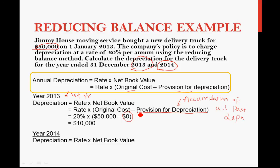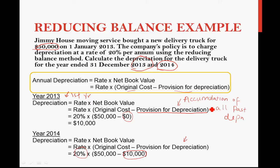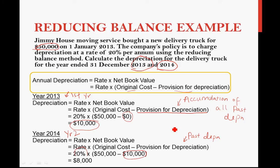Now for 2014: the formula stays the same. Rate is still 20%, original cost is still $50,000. But now provision for depreciation is $10,000 — no longer 0. Why? Because provision for depreciation is an accumulation of all past depreciation. 2014 is year 2, so there is a previous year's depreciation of $10,000. Therefore, depreciation for 2014 = 20% × ($50,000 − $10,000) = 20% × $40,000 = $8,000.